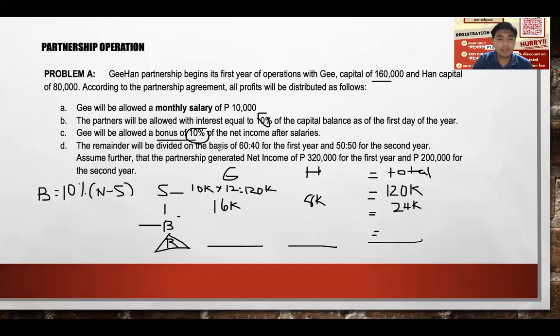The remainder will be divided on the basis of $60,000 to $40,000 for the first year, and $50,000 to $50,000 for the second year. Since we're in the first year, we use the 60:40 — or equivalently 6:4 — ratio.